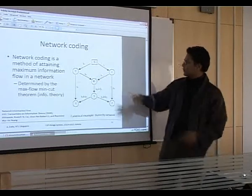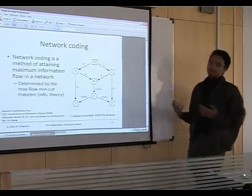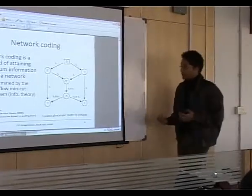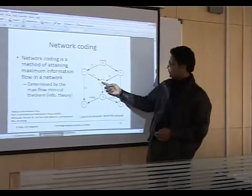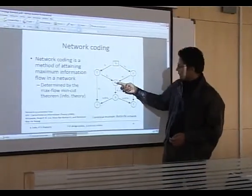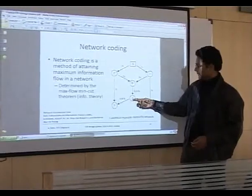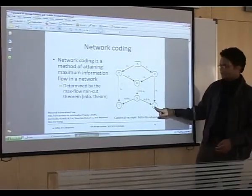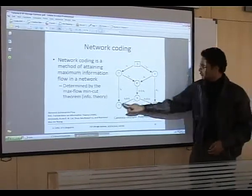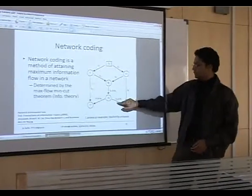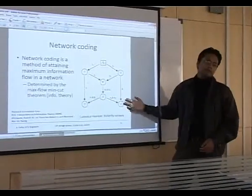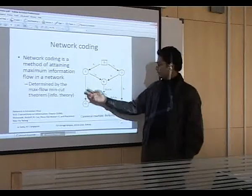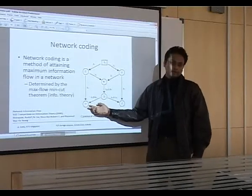So now W has both B1 and B2. If W sends B1 to X, then X can send B1 to Z and B1 to Y. Then Z will be happy — it will get both B1 and B2 next time. But Y will not be happy; it will get two copies of B1.